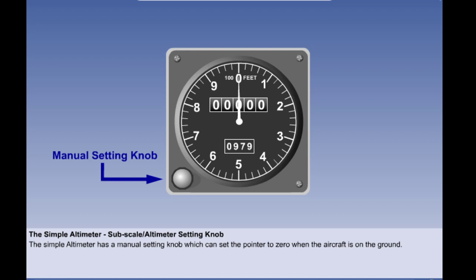The simple altimeter has a manual setting knob which is geared to the pointer. If this knob is used to set zero on the ground, we call the altimeter setting QFE and we say that the altimeter indicates height. These terms will be explained in more detail in the next lesson. If we set the airfield distance above sea level when on the ground, we call the pressure setting QNH and the altimeter indicates altitude. We'll explain this in more detail later.